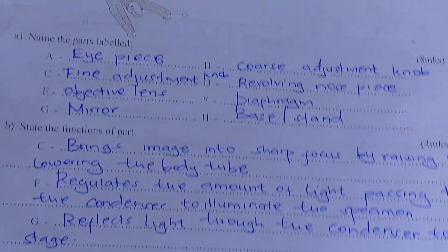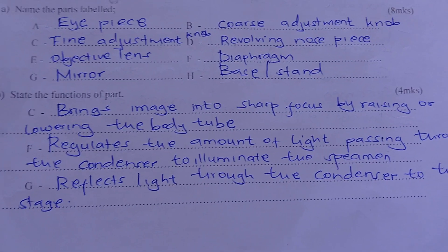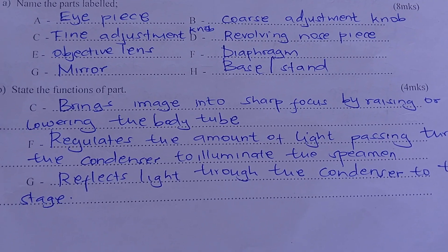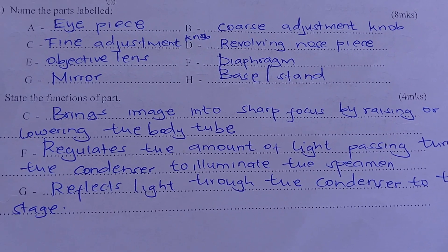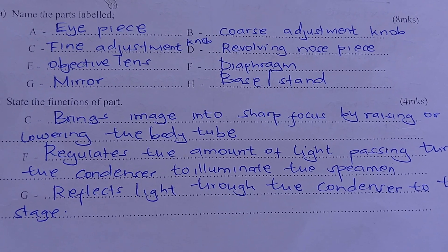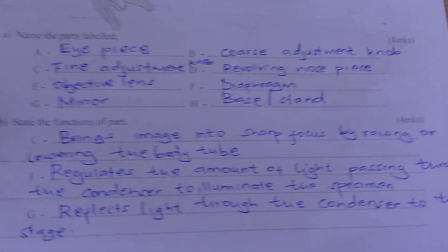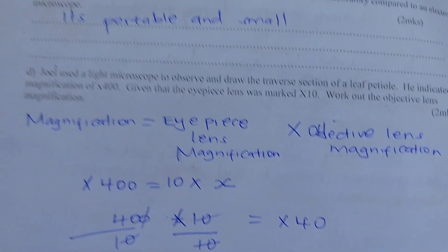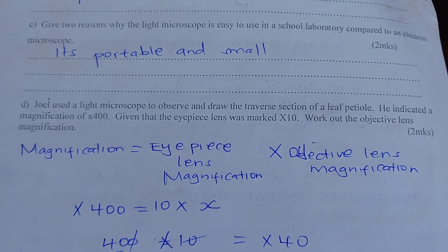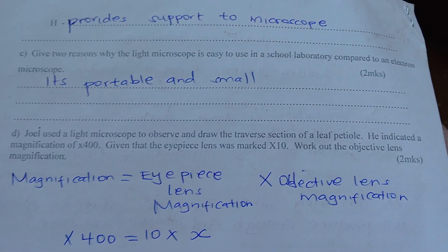The functions: C brings an image into sharp focus by raising or lowering the body tube. F regulates the amount of light passing through the condenser to illuminate the specimen. G reflects light through the condenser to the stage. H provides support to the microscope.